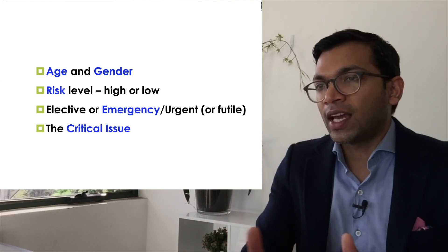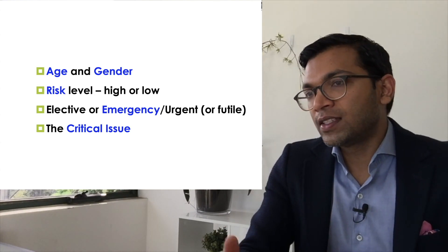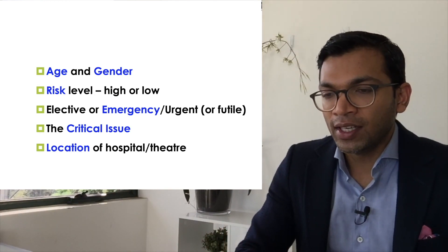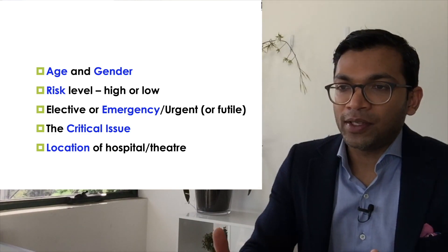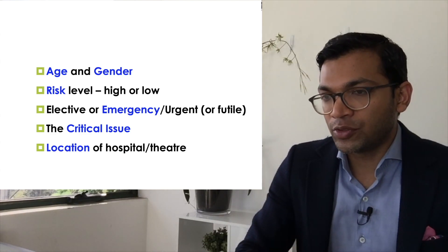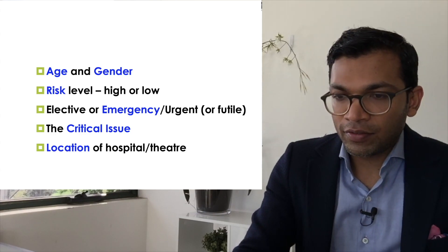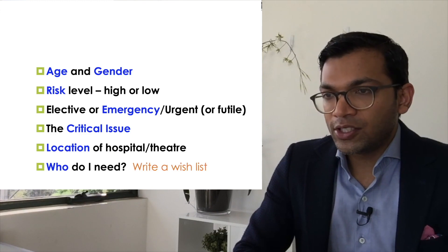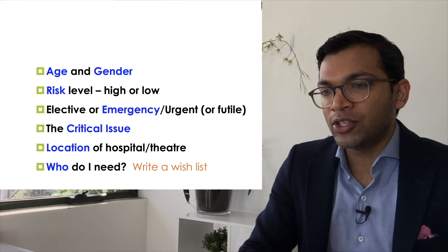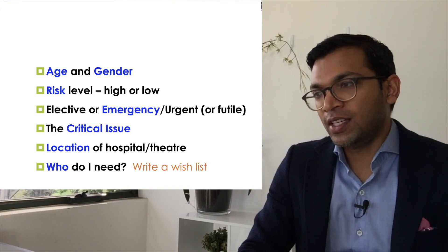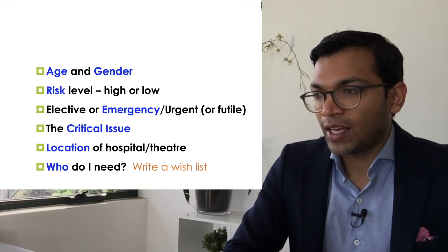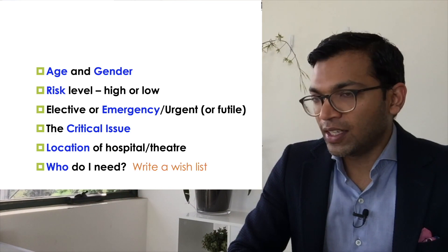The critical issue is just two or three points about what you think is most important — what you believe the viva will use to discriminate between candidates. Location of hospital and theatre is something we don't often think about in tertiary hospital training, but ANZCA needs trainees to understand that most anaesthetists will work in small private hospitals. Finally, think about 'who do I need' — take a minute to write a wish list of all the people you might refer to or need in an emergency, including obstetrics, paediatrics, AAA management, and specialty assistants.